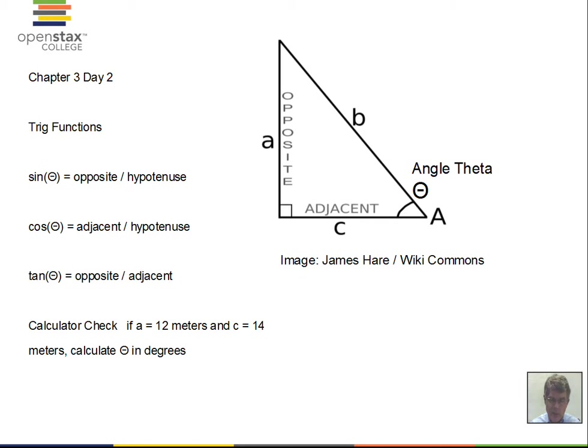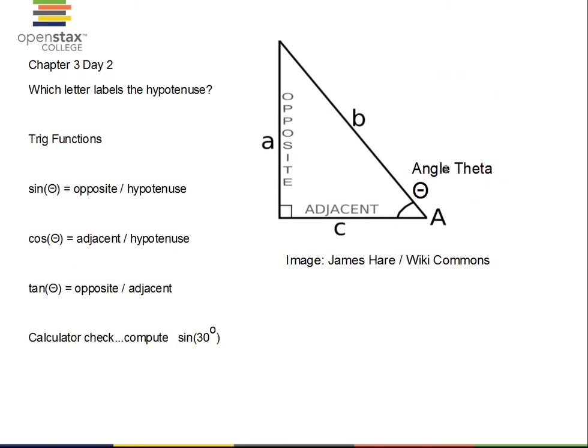Another quick check: compute the sine of 30 degrees. Depending on your calculator, you either type in 30 and then activate the sine function, or activate sine first then type 30. You should get 0.5 if your calculator is in degree mode, and most often with trig work we'll stay in degree mode.